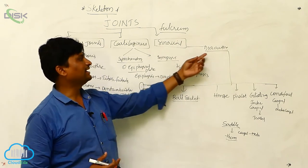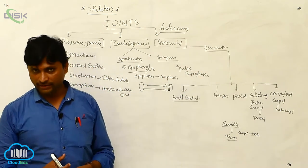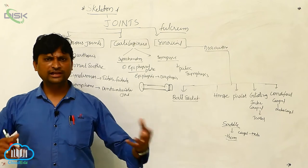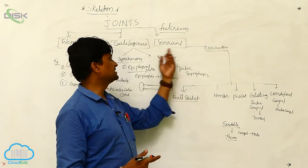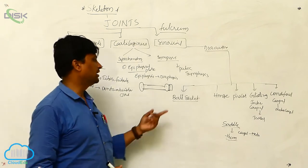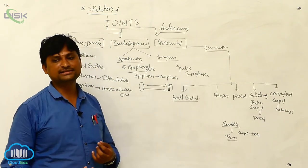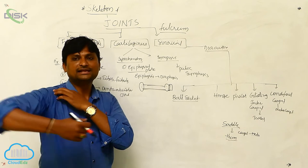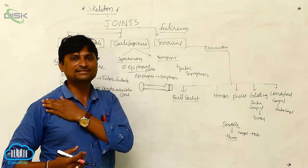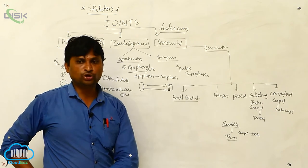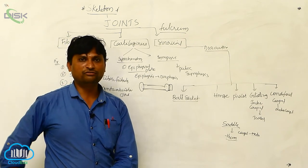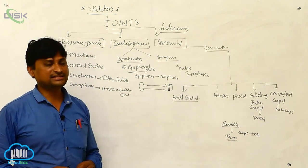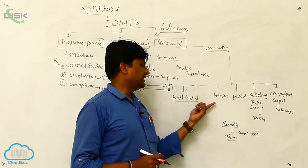The remaining type is the synovial joint. Synovial joints are called diarthrosis, meaning freely movable joints. There are many joints that are freely mobile, and all of those joints are considered synovial joints. These include ball and socket joints — for example, the humerus articulates with the pectoral girdle, and the femur articulates with the acetabulum of the pelvic girdle. Both are ball and socket joints.